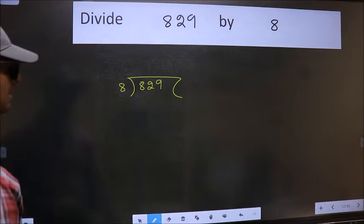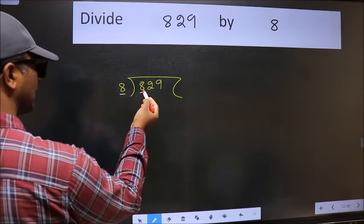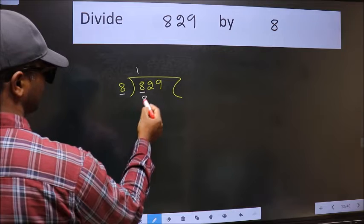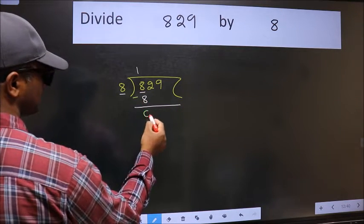Next, here we have 8 and 8 here. When do we get 8 in 8 table? 8 once 8. Now we should subtract. We get 0.